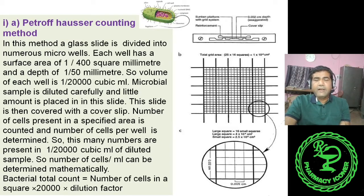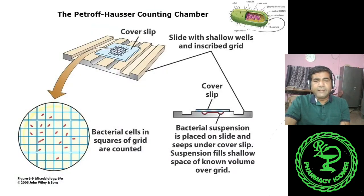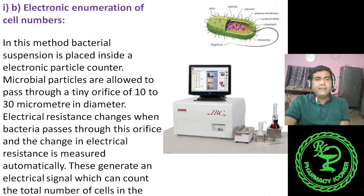Here we do not know whether cells are living or not, so we can determine the total number of cells present in a culture — both viable and non-viable.